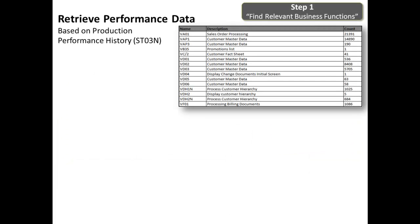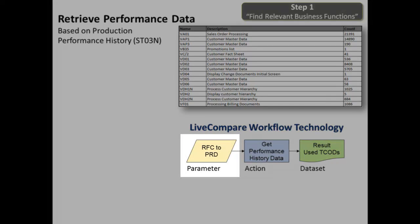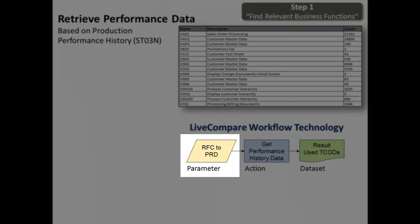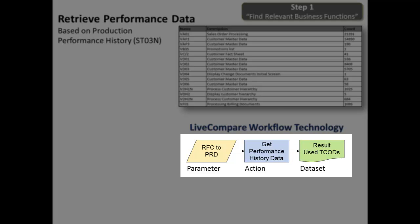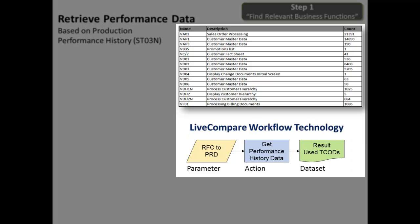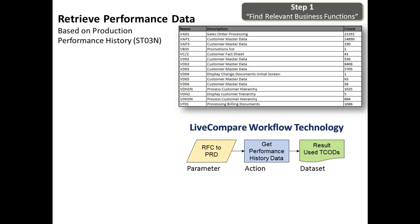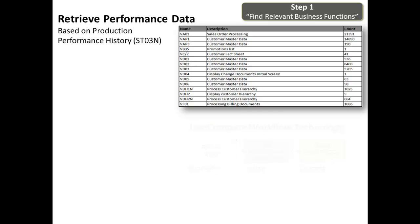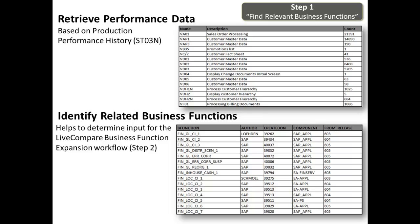Here's a sample of performance history data that's retrieved in step one, where we find relevant business functions. This is achieved with Life Compare's workflow technology, where an RFC to production parameter drives the get performance history data action, producing the above data set listing used transactions and programs. This data set then drives other actions which find relevant business functions.